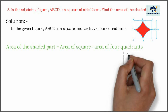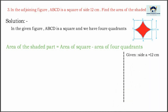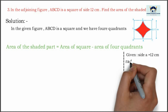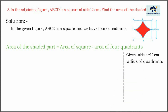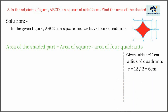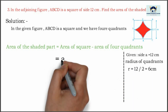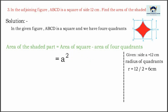We will list the given things. Side is equal to 12 centimeter. Radius of quadrant is equal to 12 divided by 2, which is equal to 6 centimeter. Now we will write the formula: area of square minus 4 quadrants, which is 4 into pi r squared divided by 4.